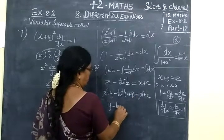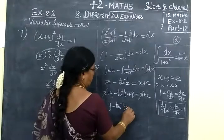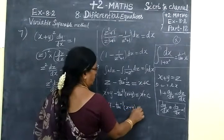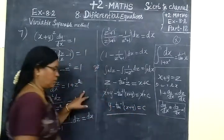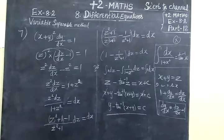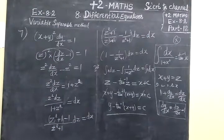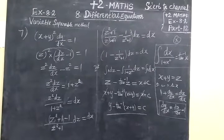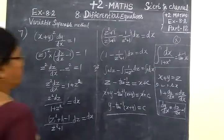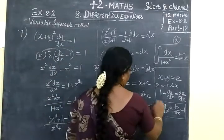So the final answer is: y - tan inverse (x+y) = c. Now we check the answer. Y minus tan inverse (x+y) equals c. This answer is correct.